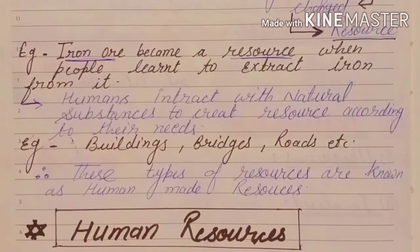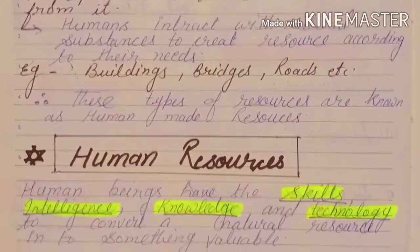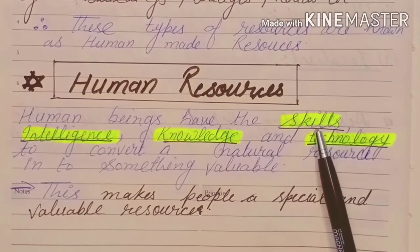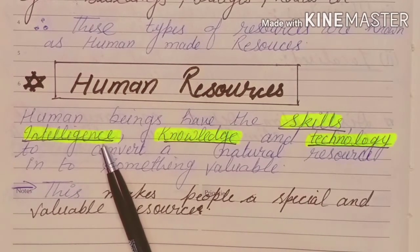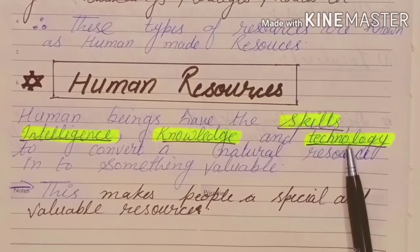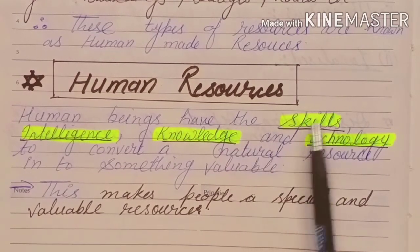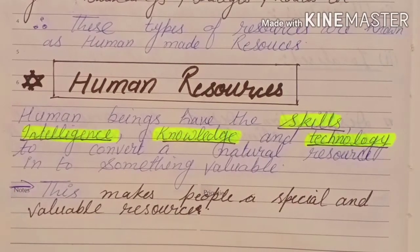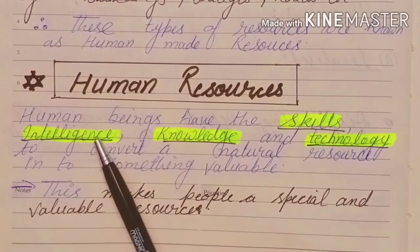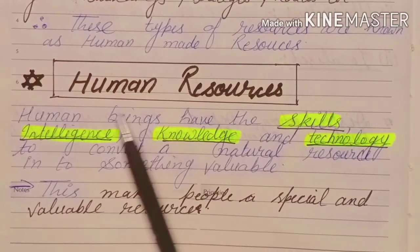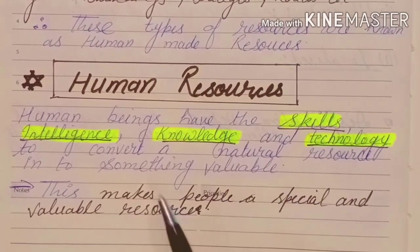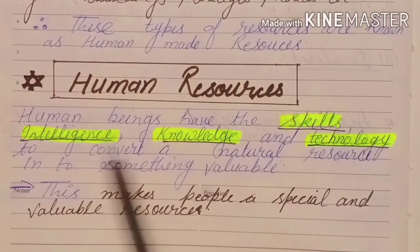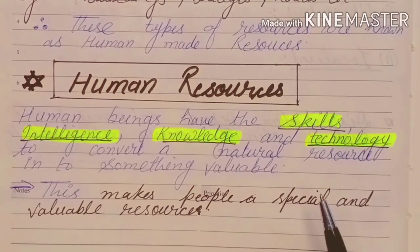Next, we have discussed natural resources and human-made resources. The third category is human resources. Human beings have skills, intelligence, knowledge, and technology. These convert natural resources into valuable things. These four qualities make people a special and valuable resource.